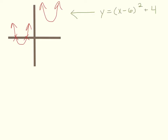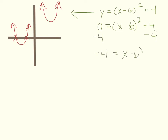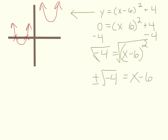For example, suppose the equation was y equals x minus 6 all squared plus 4. If we wanted to solve, we would set it equal to 0: 0 equals x minus 6 all squared plus 4. Then we would subtract 4 from both sides, giving us negative 4 equals x minus 6 all squared. To solve this, you would take the square root of both sides. But that's where you would get stuck, because you would have plus or minus the square root of a negative number equals x minus 6, and you would just stop.